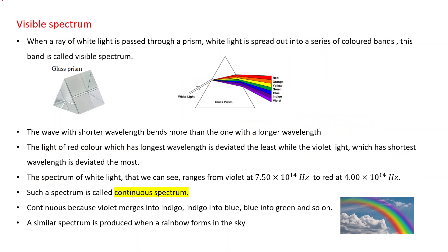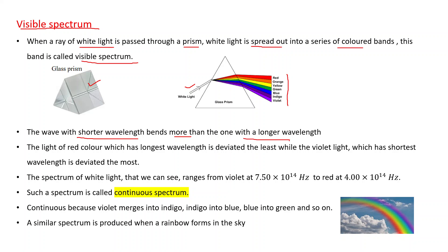Next: the visible spectrum. When white light passes through a prism, it spreads into a series of colored bands — the visible spectrum. The seven colors (VIBGYOR: Violet, Indigo, Blue, Green, Yellow, Orange, Red) are produced. Waves with shorter wavelength bend more than those with longer wavelength.